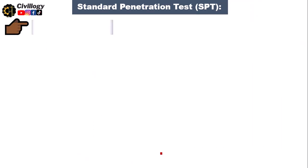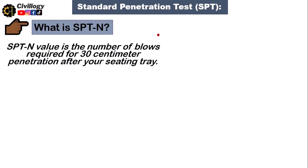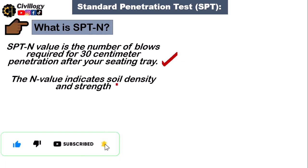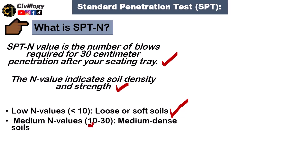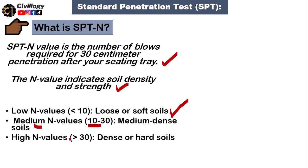SPT N is the number of blows required for 30 cm of penetration after the seating drive. The first 15 cm is not counted; after that, you count the blows for the consecutive 30 cm. The N value indicates soil density and strength: if N is greater, the soil is harder; if N is lower, the soil is softer or loose. If N is less than 10, the soil is loose or soft; between 10 and 30 indicates medium dense soil; and greater than 30 indicates dense or hard soil.